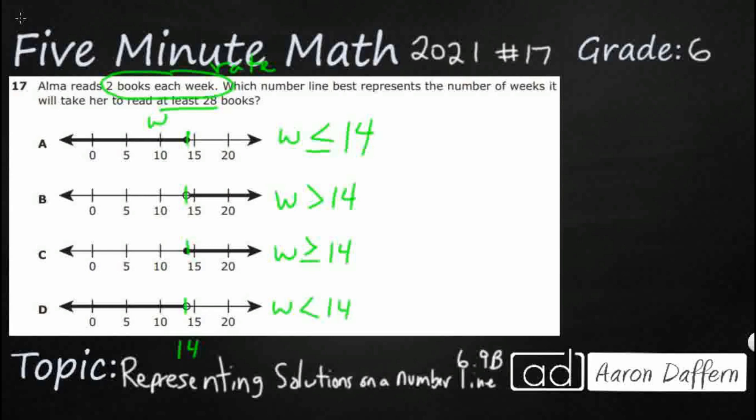So these pairs line up: A and D pair together (less than, open vs. closed), and B and C pair together (greater than, open vs. closed). The only difference within each pair is open versus closed circle. Now that we know what all of these represent, let's solve the problem. Since Alma can read exactly 28 books, our expression is going to include an equal to — the question is whether it's greater than or less than along with that equal to.